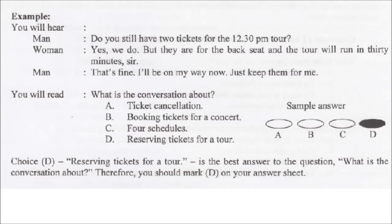Example. You will hear: Do you still have two tickets for the 12:30pm tour? Yes, we do, but they are for the back seat, and the tour will run in 30 minutes, sir. That's fine. I'll be on my way now. Just keep them for me. You will read: What is the conversation about? A. Ticket cancellation. B. Booking tickets for a concert. C. Tour schedules. D. Reserving tickets for a tour. Choice D — Reserving tickets for a tour — is the best answer. Therefore, you should mark D on your answer sheet.